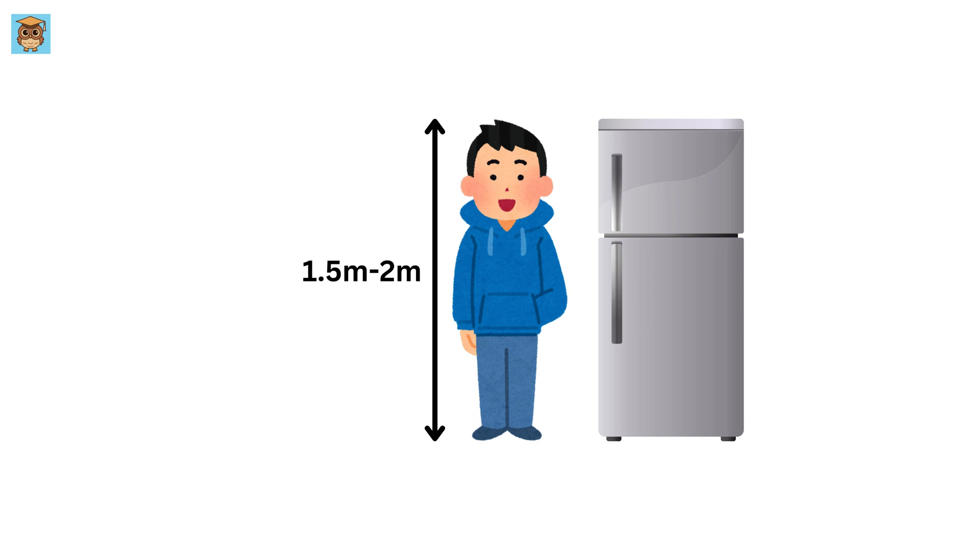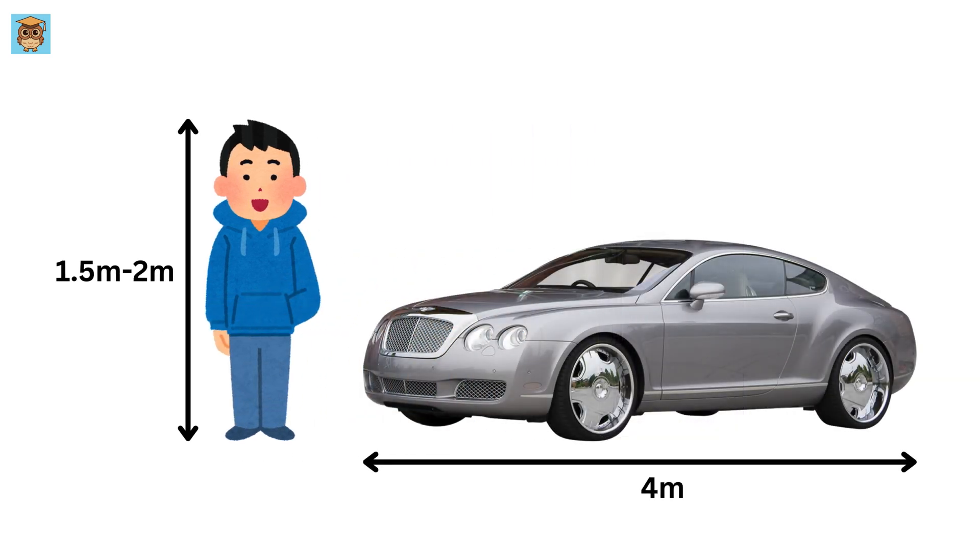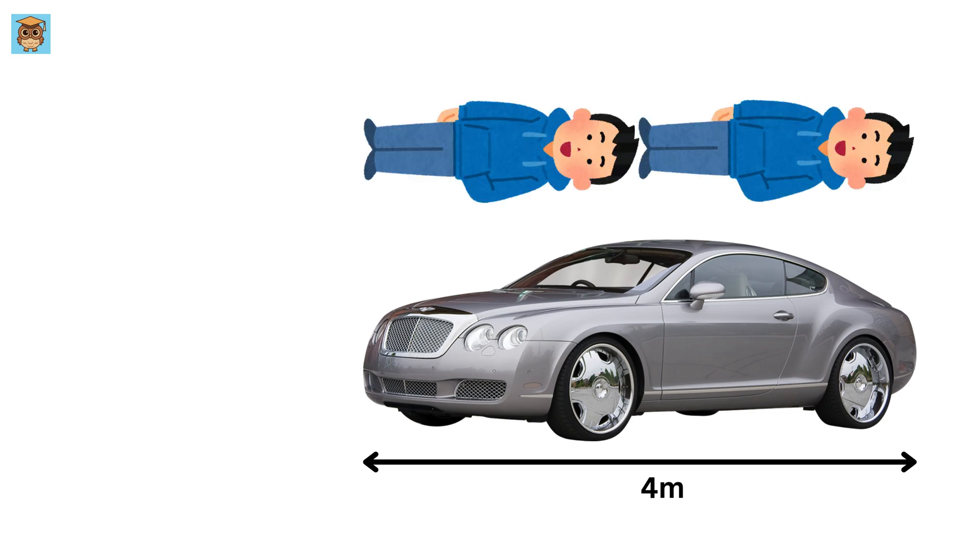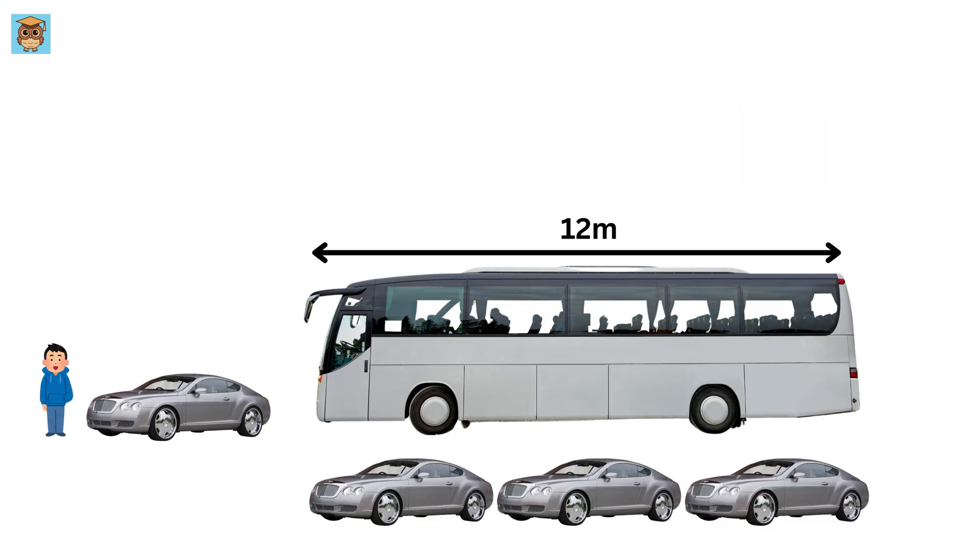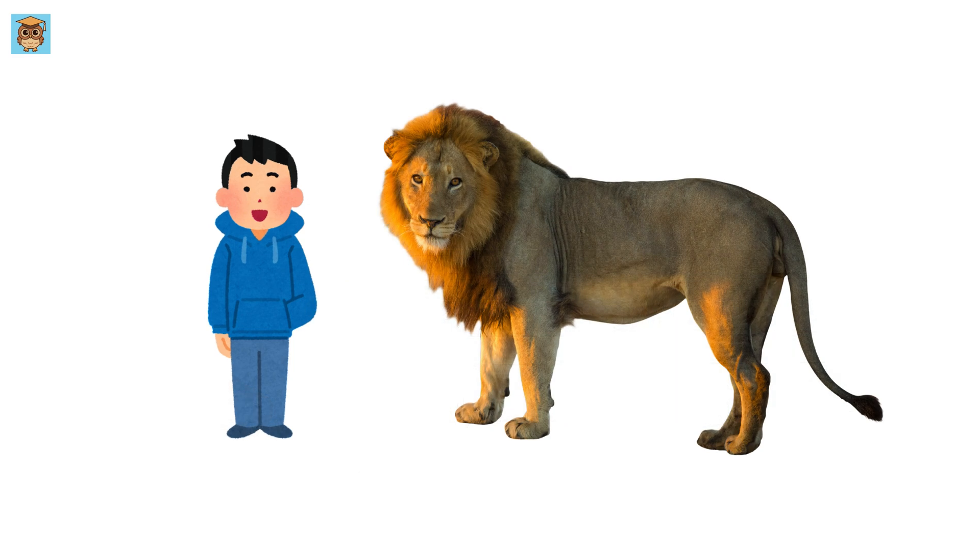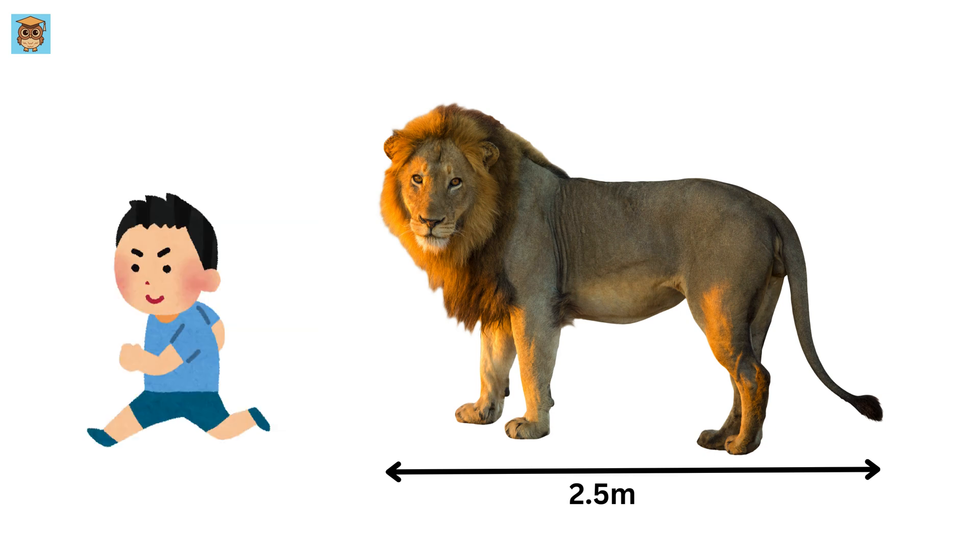But let's go a little bigger. A car is around four meters long. That's like stacking two or three of you head to toe. And if you've ever seen a bus, those are 12 meters long. Now, think of a lion. A fully grown male lion is about two and a half meters long, meaning it's longer than you and you should run when you see one.